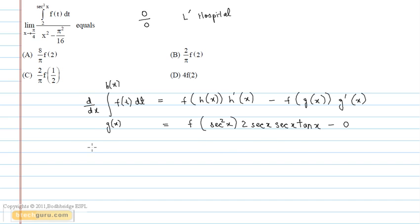Now, applying this formula, we can rewrite the limit L as equal to limit x tends to π/4 of f(secant square x) into 2 secant square x tan x by 2x.